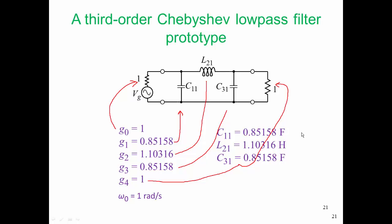So g1 is the numerical value of c11. C11 comes out to be 0.85158 farads. L21 is a very large inductance, and c31 is a very large capacitance as well. But of course, our corner frequency is one radian per second, so it's not surprising these values are so large.